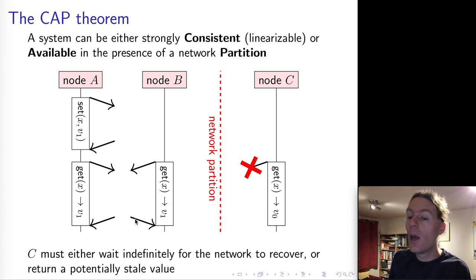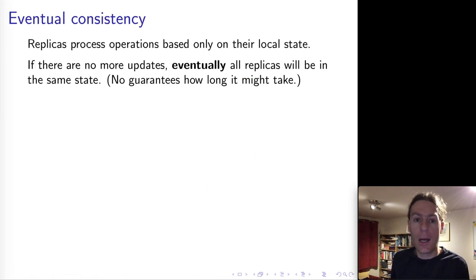We've got on the left-hand side of the partition nodes A and B, which form a quorum, and they can continue providing a linearizable service. But node C here on the right-hand side is stuck in this dilemma because either node C has to wait for this network partition to be healed before it can reach a quorum, which might take an indefinite amount of time, so during that time node C is effectively unavailable, or node C just goes ahead and uses its local state, but in that case it won't know about the value V1 that was written by A, so we will have violated linearizability.